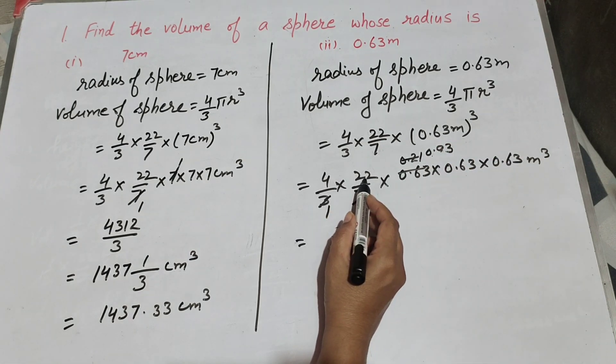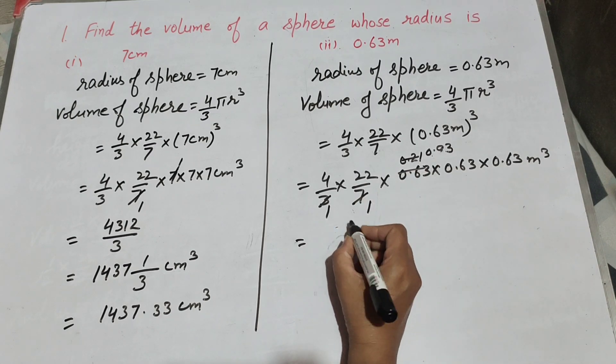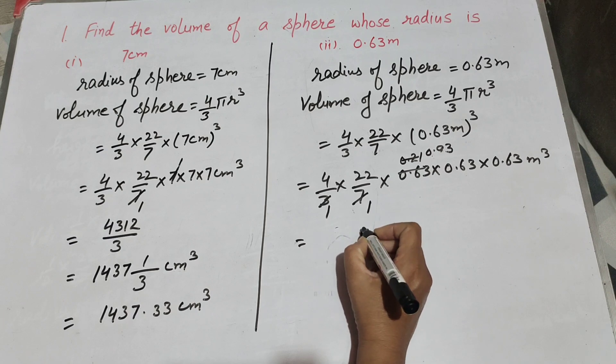Now we multiply them. 4 times 22 is 88. 88 times 0.03. On multiplying them we get answer 2.64.